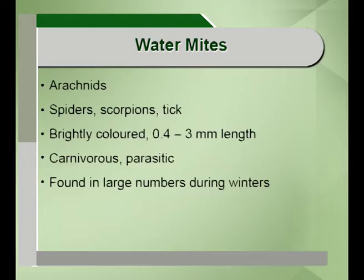Leeches require very high oxygen levels and are found in clean waters. Water mites or arachnids comprise ticks, scorpions and spiders. They are brightly colored, can be carnivorous or parasitic, and are found in large numbers during the winter season.